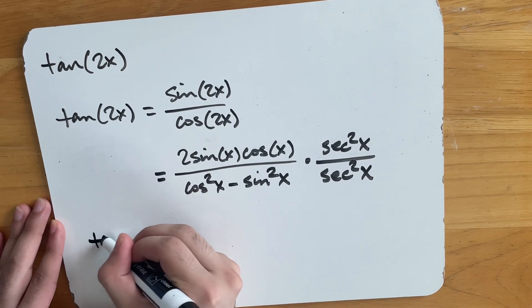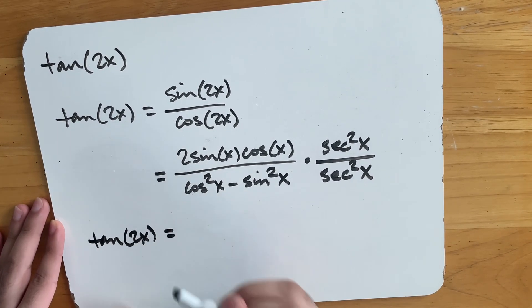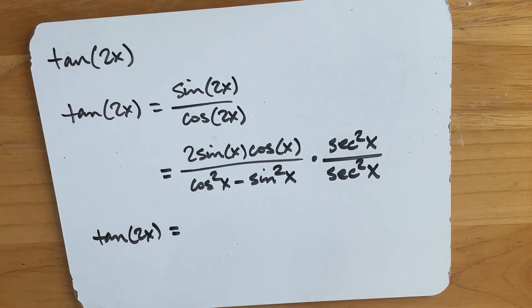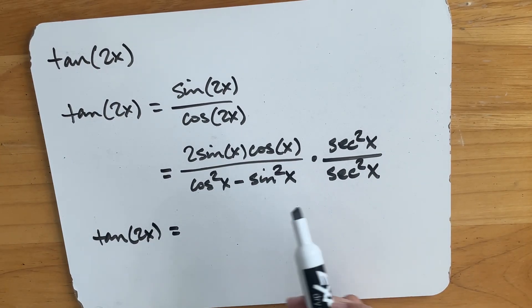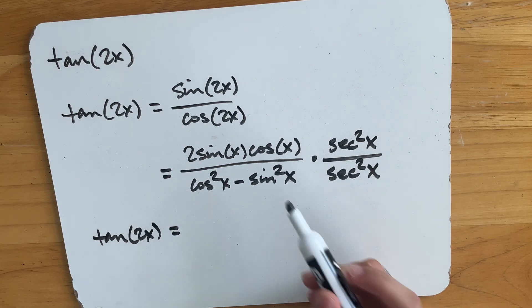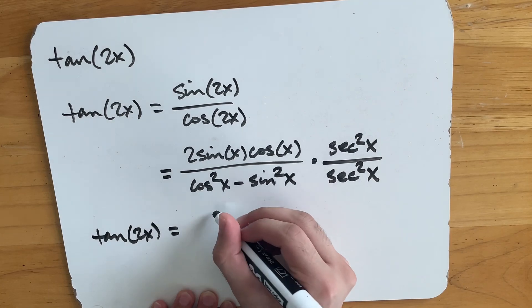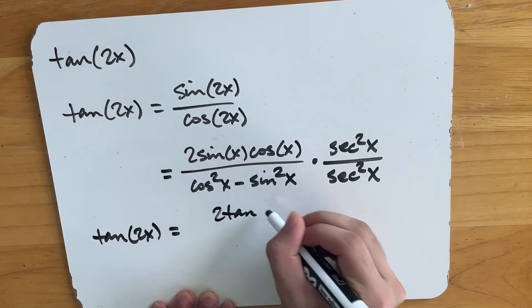So we do that and we get, so this is our final answer basically, we get tan of 2x is equal to, alright, so we do the division now. So we divide the top by cosine squared x. This cosine x is gone and we end up with 2 sine x over cosine x, which is just 2 tan of x.